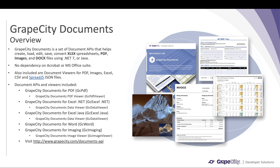You want to store these documents for long-term usage, share within the organization, or share over the web. GrapeCity Documents is a set of document APIs that helps to create those documents, edit them, and save them back, and also helps you to convert documents of one format to another. All this you can do within a .NET application or Java application.